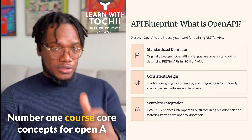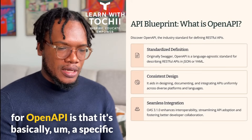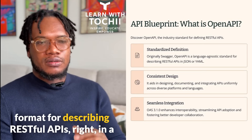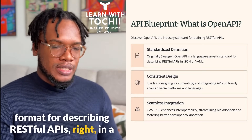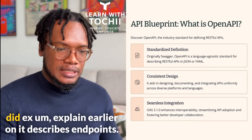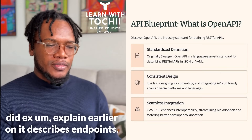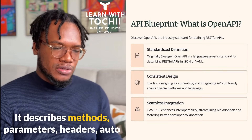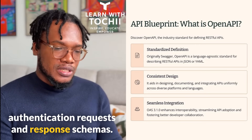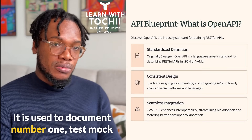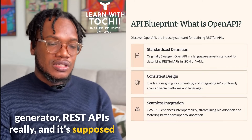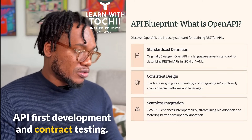The core concepts for OpenAPI are that it is basically a specific format for describing RESTful APIs in a machine-readable way. It uses YAML and JSON, and it describes endpoints, methods, parameters, headers, authentication, requests, and response schemas. It is used to document, test, mock, and generate REST APIs, and it supports API-first development and contract testing.